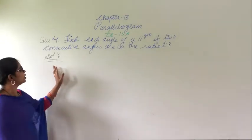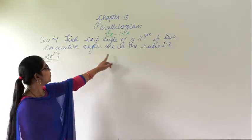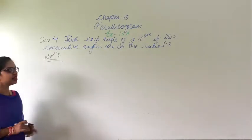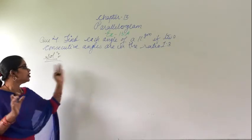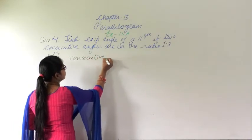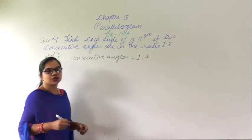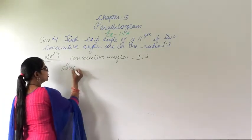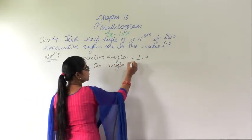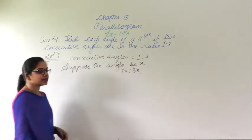Question number 4: find each angle of a parallelogram if two consecutive angles are given in the ratio 1:3. The consecutive angles are in ratio, so let the angle be X. The first angle will be 1X and the second will be 3X.